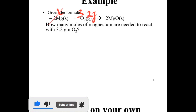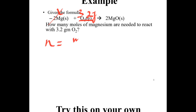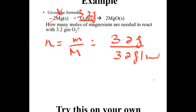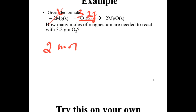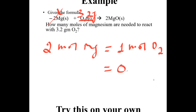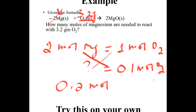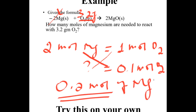How many moles of magnesium are needed to react with 3.2 grams of oxygen? Moles of oxygen equals 3.2 grams over molar mass of oxygen, which equals 0.1 moles. From the balanced chemical equation, 2 moles of magnesium react with 1 mole of oxygen. So 0.1 moles of oxygen requires 0.2 moles of magnesium are needed.